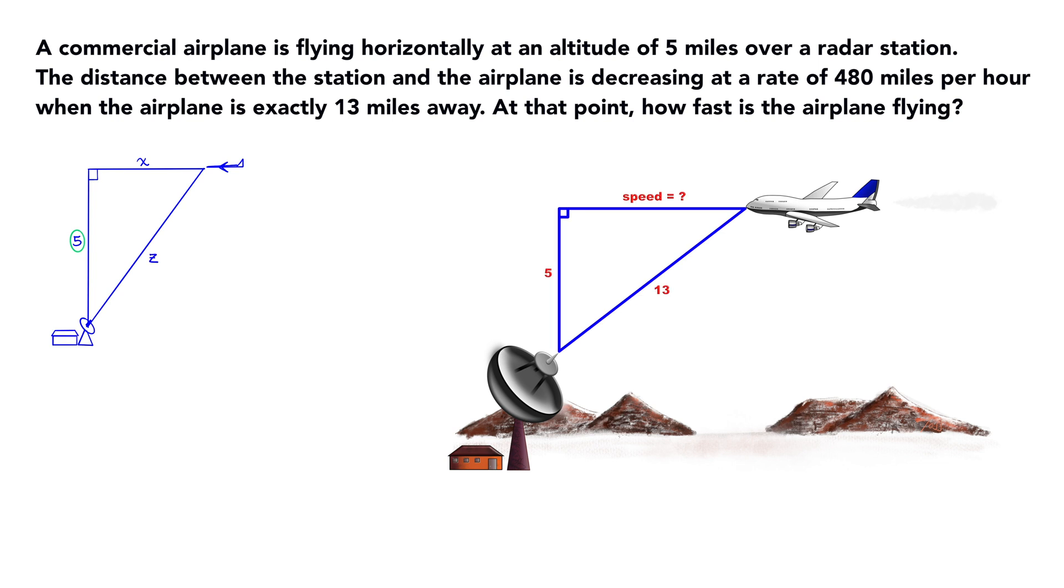Let z be the distance from the plane to the station or the diagonal distance, the hypotenuse of the triangle.